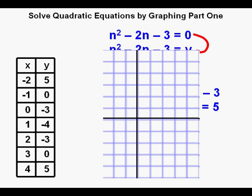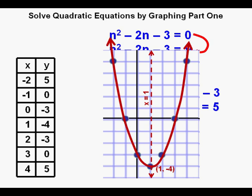He now sets up his graph paper to plot his points. Here's the vertex at (1, -4) and the axis of symmetry of x = 1 plotted. And here are all the other points plotted. And here's the parabola drawn through the points.